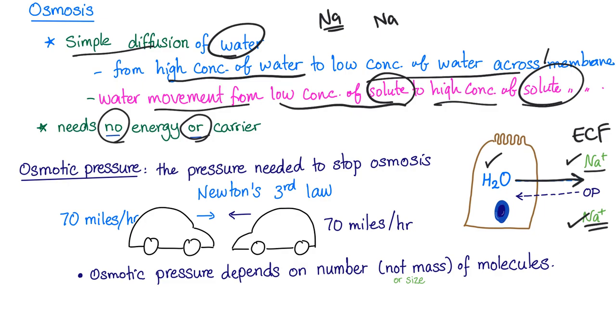What is the osmotic pressure? Some people can say it's the pressure that causes osmosis, which is true. But it's very difficult to measure that. So, we define it as the pressure needed to stop osmosis. I'm so confused right now. Remember Newton's third law of motion? For every action in nature, there is an equal and opposite reaction. Okay, let's say that this car is moving at 70 miles per hour and this car is moving at 70 miles per hour in the opposite direction. When they collapse, there is no displacement to this direction or to this direction.